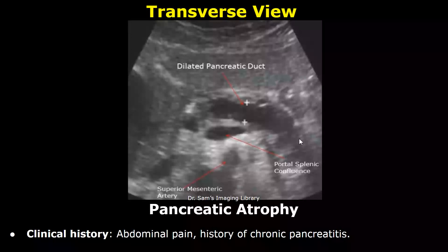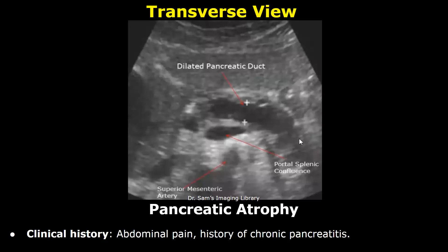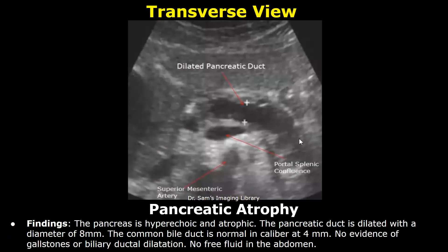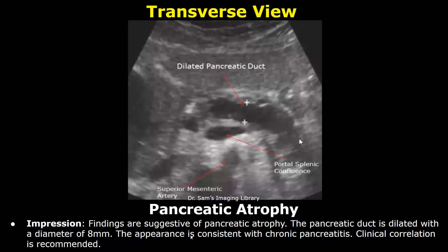This is a case of pancreatic atrophy. The clinical history was abdominal pain and history of chronic pancreatitis. In the findings, you can write: the pancreas is hyperechoic and atrophic. Then you can write about the pancreatic duct and its measurement. In the impression: findings are suggestive of pancreatic atrophy; the appearance is consistent with chronic pancreatitis. Clinical correlation is recommended.